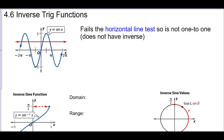4-6 inverse trig functions. Here we have the graph of sine of x. Sine starts at 0, goes up, and then goes down to negative. This function fails the horizontal line test, so it is not one-to-one. In other words, it does not have an inverse that is a function.